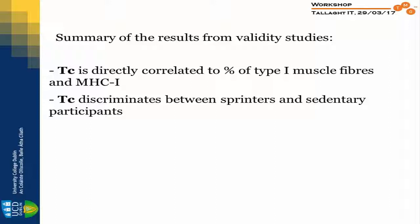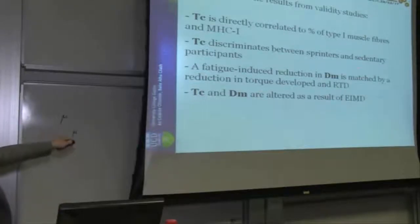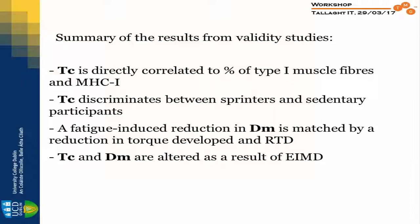Contraction time discriminates between sprinters and sedentary participants. Also, a fatigue-induced reduction in displacement is matched by a reduction in torque development and rate of torque development, as we saw in the last two graphs. Additionally, contraction time and displacement are both altered as a result of exercise-induced muscle damage.